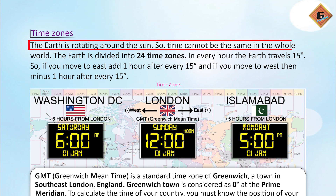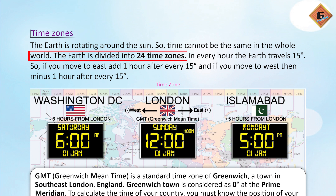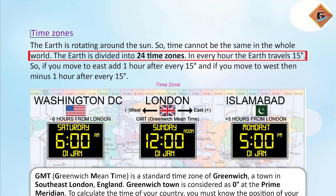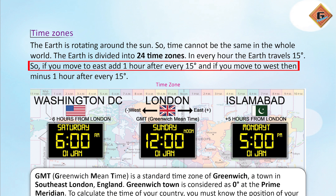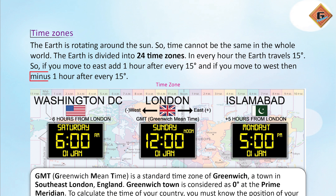The earth is rotating around the sun, so time cannot be the same in the whole world. The earth is divided into 24 time zones. Every hour, the earth travels 15 degrees. So if you move to the east, add 1 hour after every 15 degrees, and if you are moving to the west, minus 1 hour after every 15 degrees.